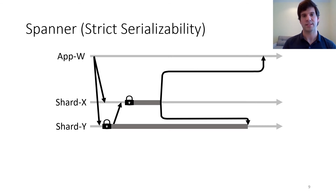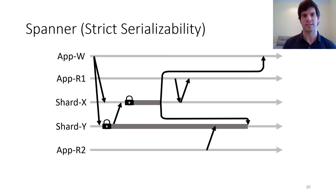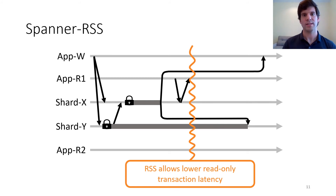Spanner also has fast read-only transactions to support read-heavy workloads. For example, process R1 can read key X in one round trip between it and the shard. But during conflicting read-write transactions, read-only transactions must sometimes block. Suppose process R2 wants to read key Y — ideally its read-only transaction would return immediately, but this is not safe under strict serializability. Since R1 already read the new value of X, strict serializability requires all future reads to include the new writes. Since R2 doesn't know whether some other process is reading at another shard, it has to be conservative and blocks until it learns that the read-write transaction committed. Under RSS, only reads that causally follow R1's read must include the new values of X and Y, so R2's read can return immediately, reducing its latency.